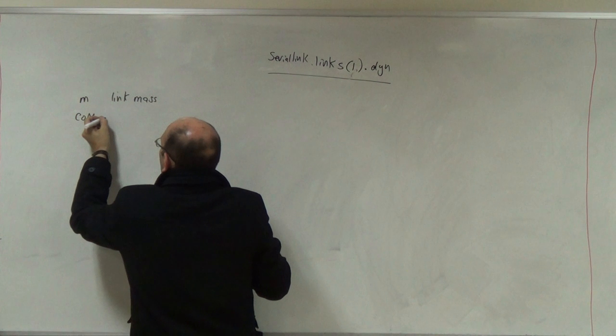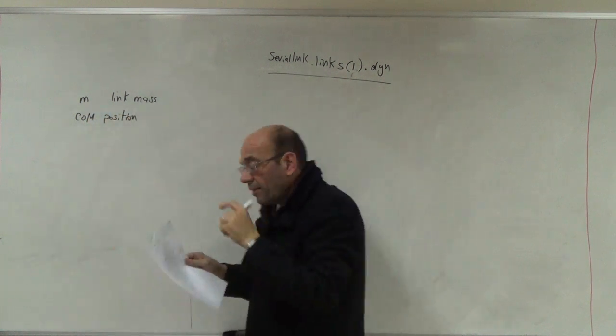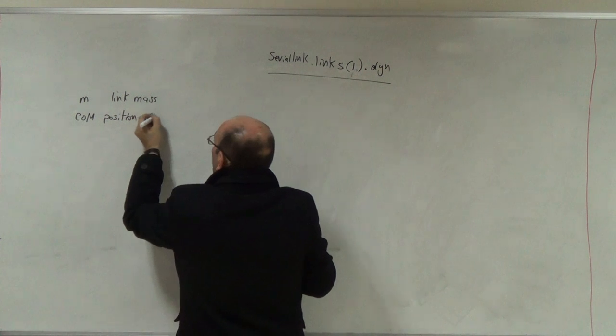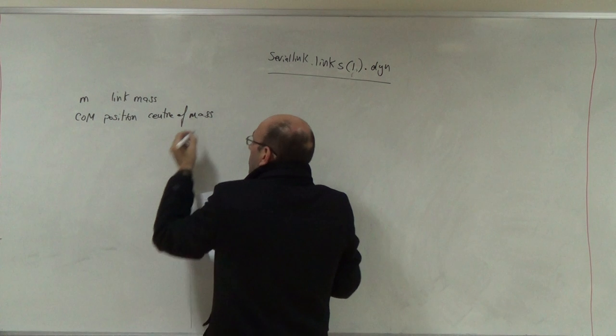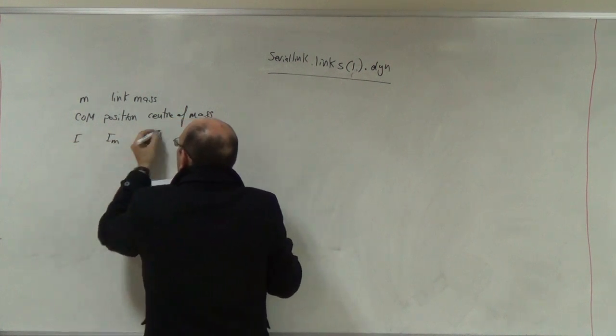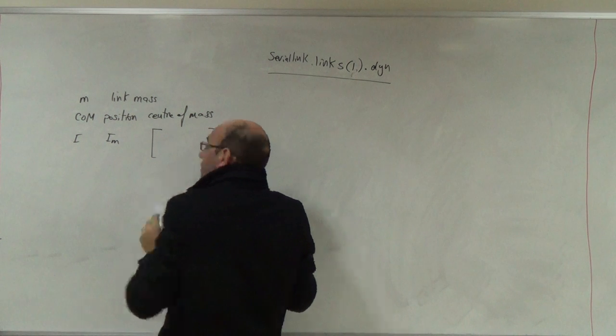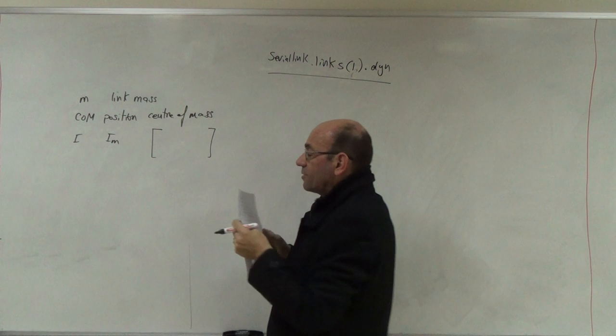Then it gives me the center of mass position with respect to this mass, the center of mass. Then it gives me IM, which is a three by three matrix, but actually it has six parameters.